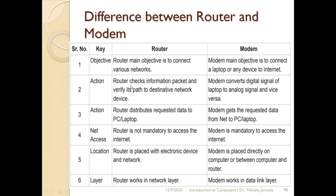The second difference is related to action. What does the router do? The router first checks the data packet and then verifies which path is good, so that the particular data packet can reach the destination network device. What does the modem do? The modem performs modulation and demodulation — that means it converts the digital signal to an analog signal and the analog signal back to a digital signal.